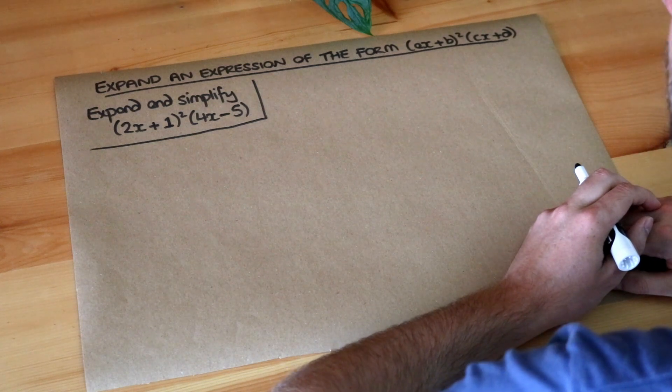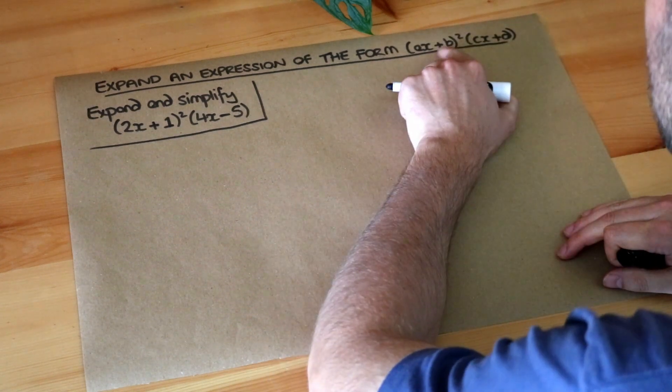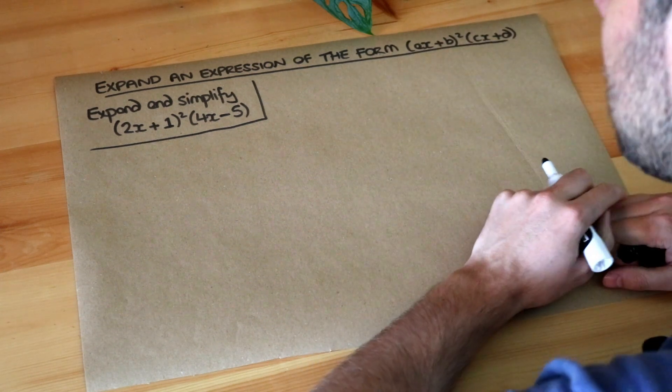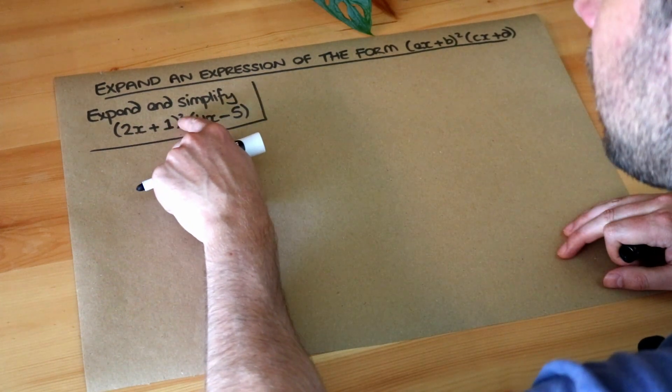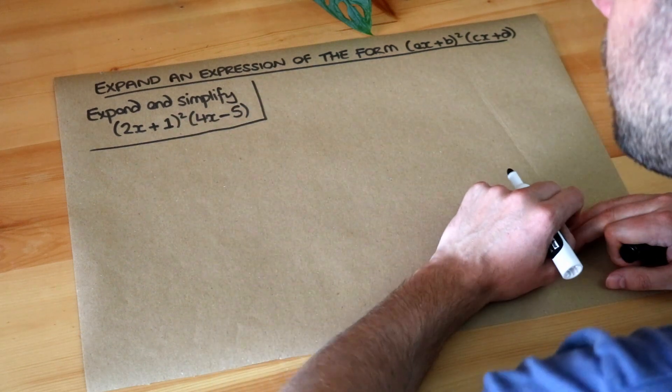Hello and welcome to this Dr. Ross video on expanding expression of the form (ax+b)²(cx+d). So we want to expand and simplify (2x+1)²(4x-5).